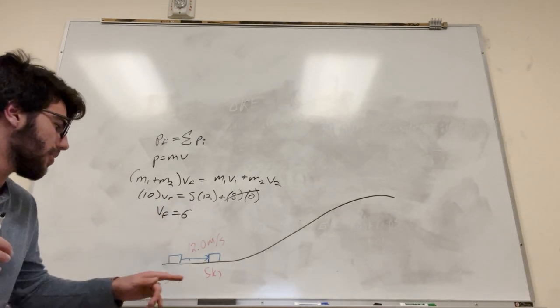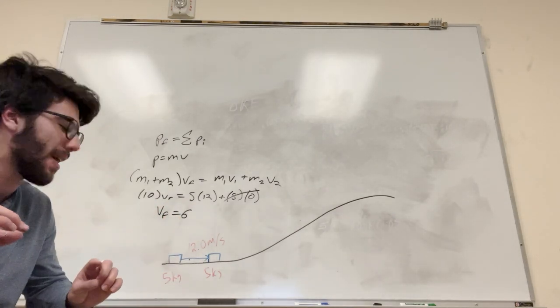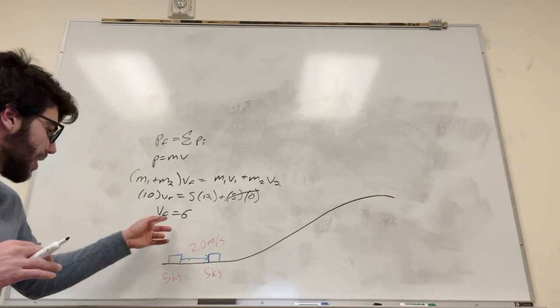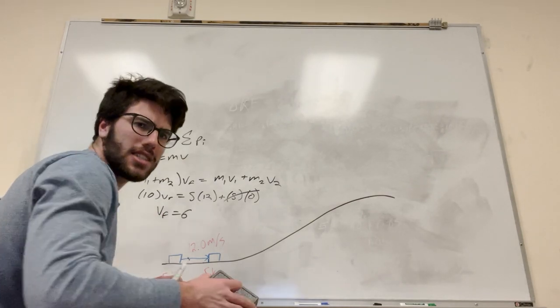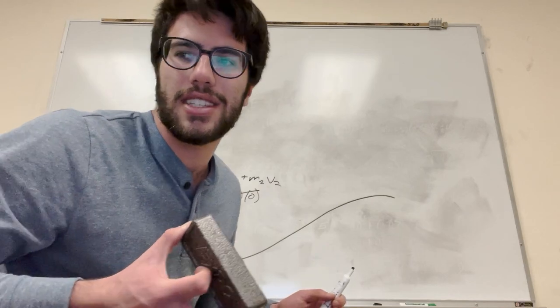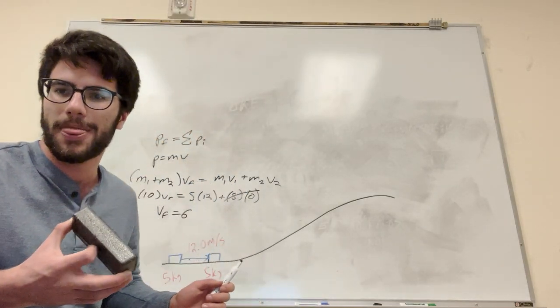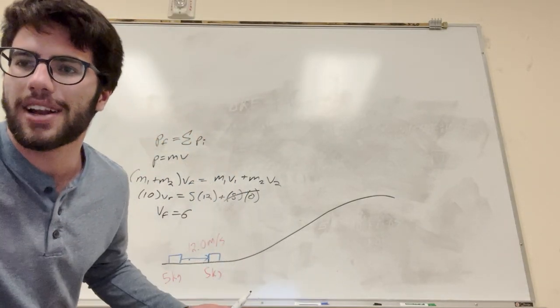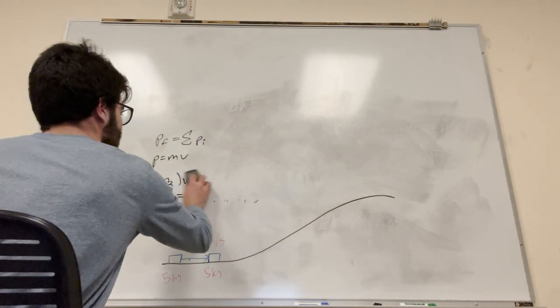Which makes sense, right? This is going twelve, the two hit is twice as much mass, it goes half the speed. So there you go, that's velocity final. That's the question, right? No, that's not. Okay, that's one thing you need though. Where am I at? Okay, yeah. Okay, so we got what we need.